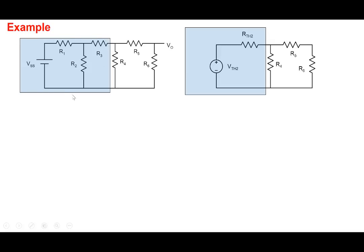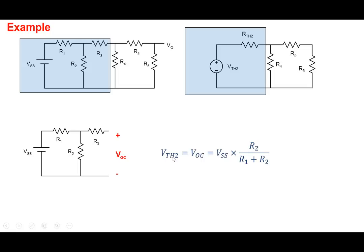As an example, to find VTH2 for this part of the circuit: disconnect and break it at the terminals, creating an open circuit. With R3 open, it becomes a simple voltage divider, so VTH2 equals VSS × R2 / (R1 + R2). Disconnect the other part, open-circuit the terminals, find the open-circuit voltage — that is your Thevenin voltage.